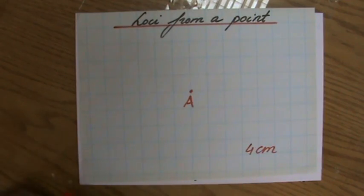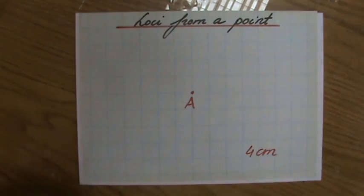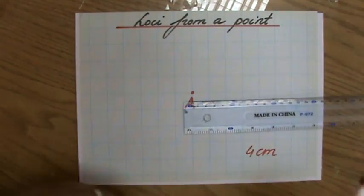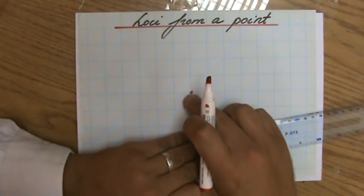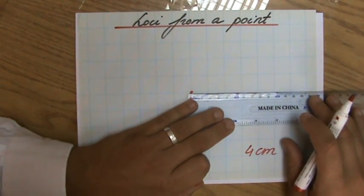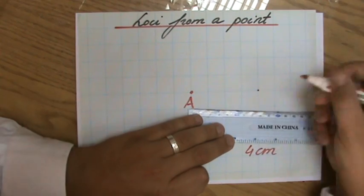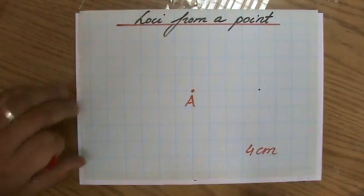All the points four centimeters away from point A. I could take my ruler and measure four centimeters. I'll say that one block is one centimeter. So then one, two, three. Over here is a point indeed four centimeters away from A.